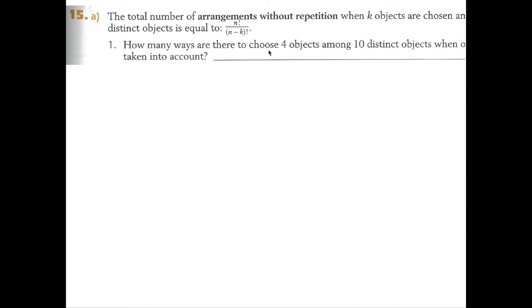Now how many ways are there to choose four objects among 10 distinct objects when order is taken into account? Order matters. This is called a permutation without replacement, which is n factorial over, and I like to use r instead of k, but over n minus r factorial.